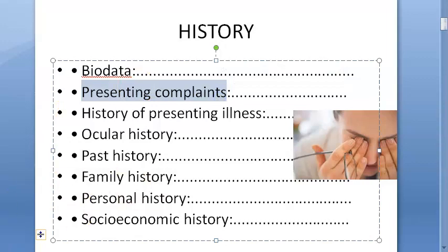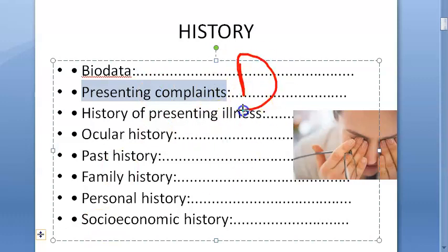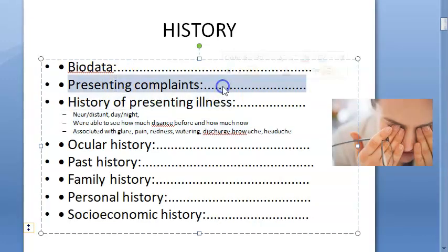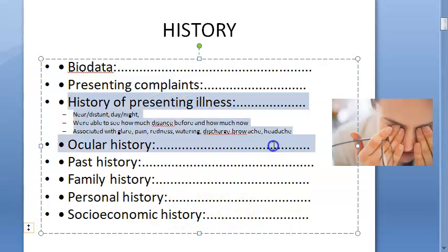Moving to presenting complaints — this is the chief complaint, what the person is complaining about. In cataract, they will typically complain about diminution of vision. You should note whether it is the right eye, left eye, or both. Two key features: is it sudden or gradual, and is it painless? In cataract, it is usually gradual and painless.